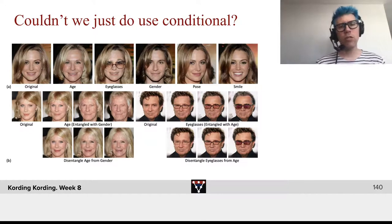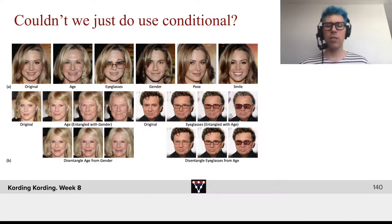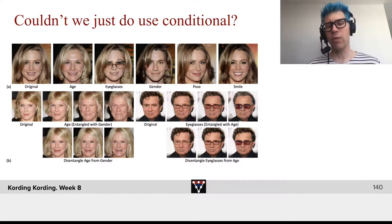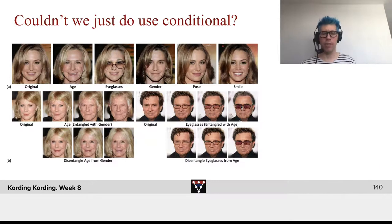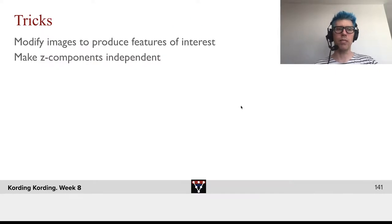Couldn't we just do that with conditional? Here's the problem. If we use eyeglasses — look what happens if you use a conditional again to do that. If we add eyeglasses, the more eyeglasses we add, the older the person gets. Why? There is a correlation of age with wearing eyeglasses in this world. Entangling is generally a problem and we want to be careful about that. Besides, conditional GANs are for certain applications a lot less efficient than the controllable ones we'll talk about.